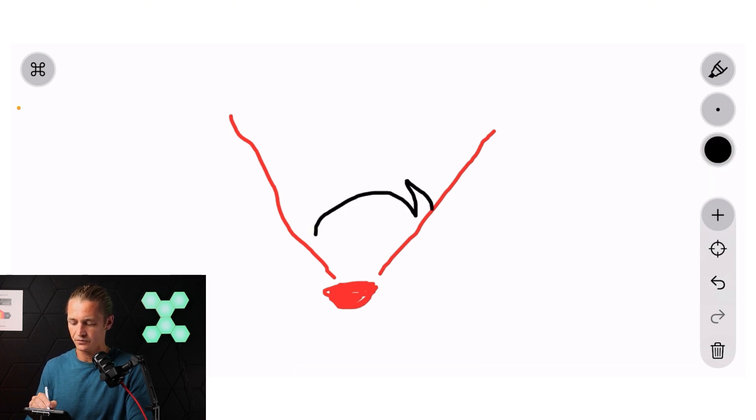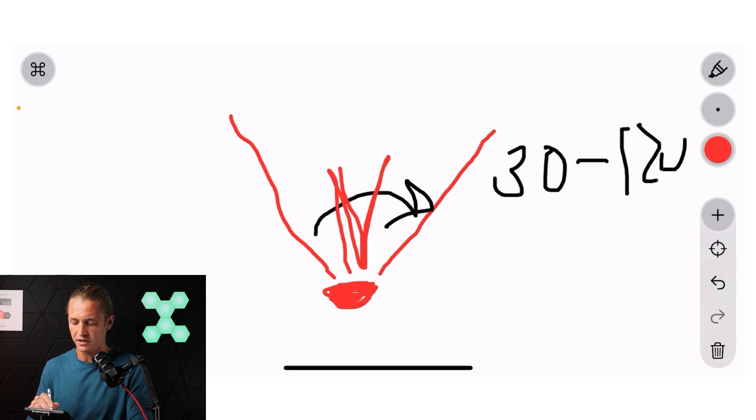This angle over here represents the beam angle. Now typically you will see between 30 and even up to 120 degrees. So a 30 degree would be a narrower beam angle, and then 120 you're looking at a wider beam angle.